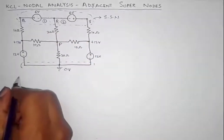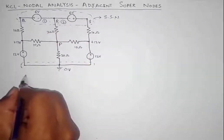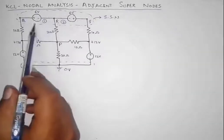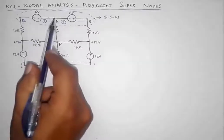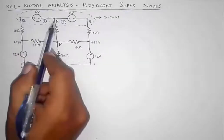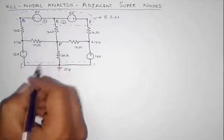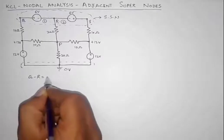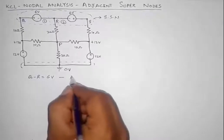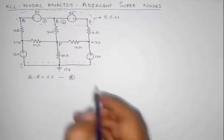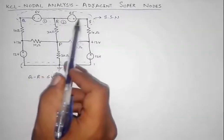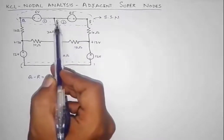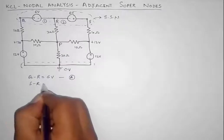As we usually do in super node analysis, we first write the voltage difference equation. The voltage difference between points Q and R is due to this 6-volt voltage source, so we can write Q minus R equals 6 volts — call this equation A. Similarly, the voltage difference between S and R is also 6 volts in super node 2, so we write S minus R equals 6 volts — call this equation B.